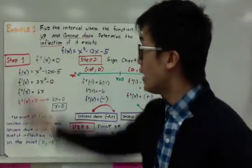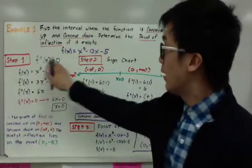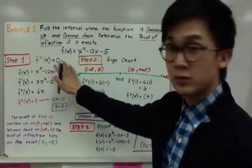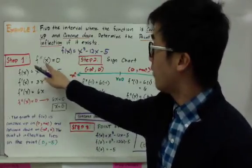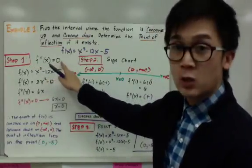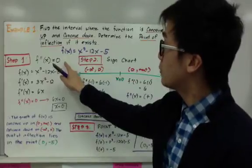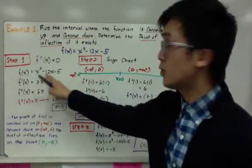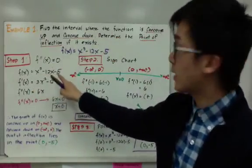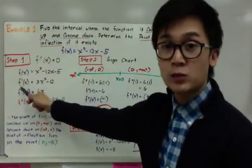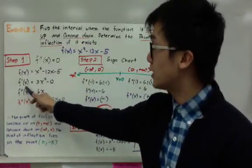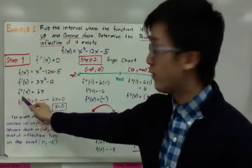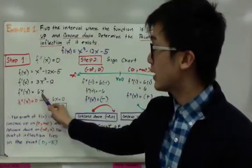We have a series of steps to organize so we can answer the following questions. Step one is to find where the second derivative is equal to 0. So f of x is x cubed minus 12x minus 5, f prime of x equals 3x squared minus 12, and f double prime of x equals 6x.